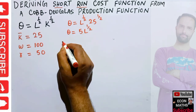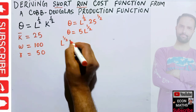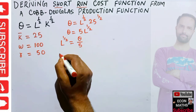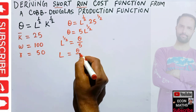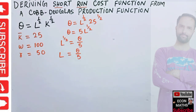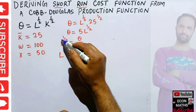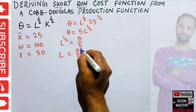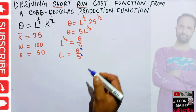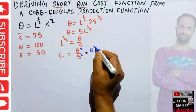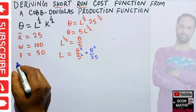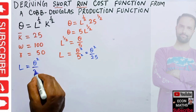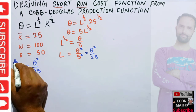Now let us solve for L. We have L^(1/2) = Q/5. Transposing the exponent — it gets reciprocated, so the power becomes 2 — we get L = (Q/5)², which gives us L = Q²/25. This result — labor as a function of output — is what we need to derive our different kinds of costs.